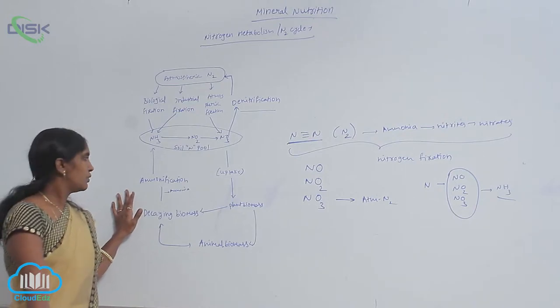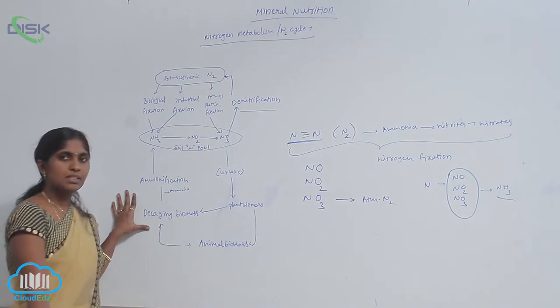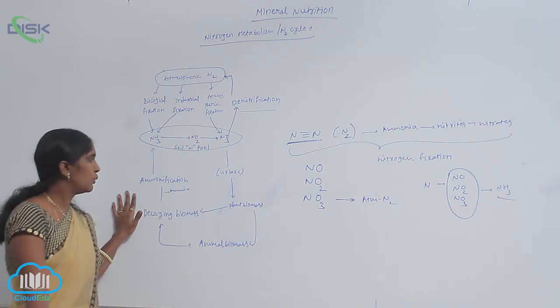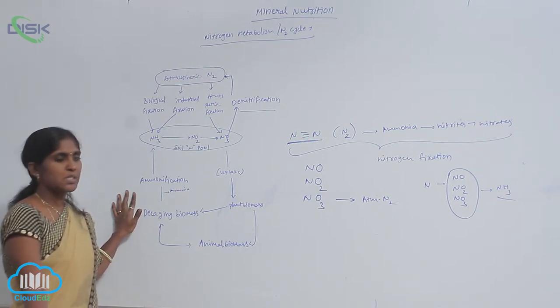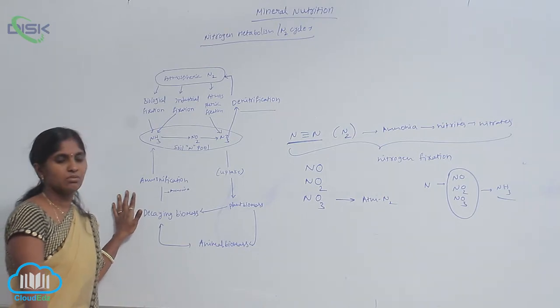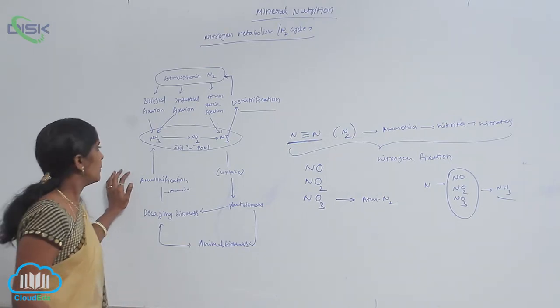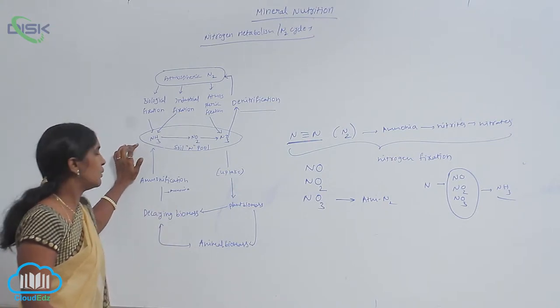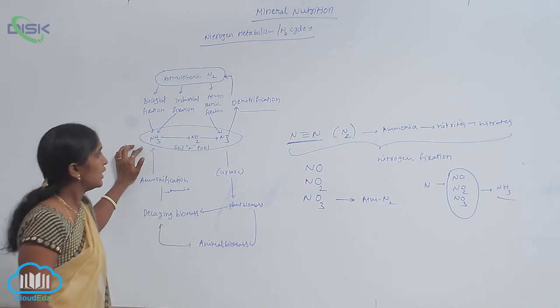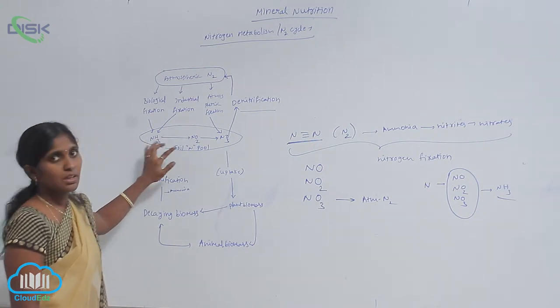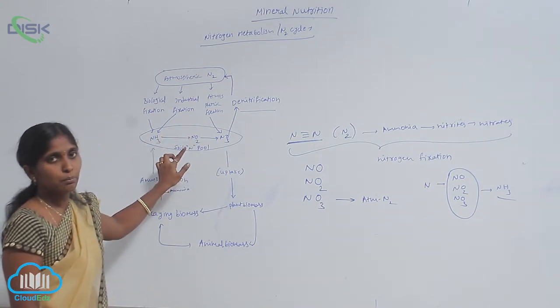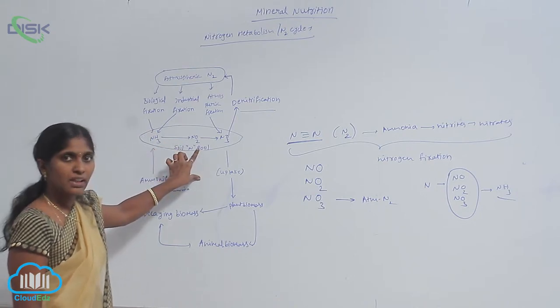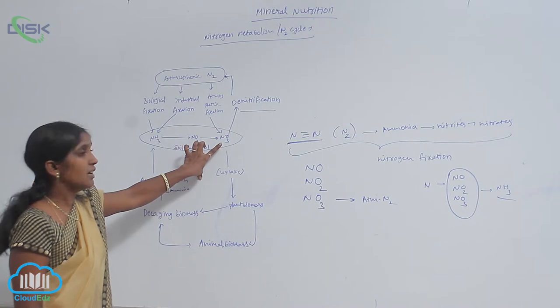Decomposition of dead plants and animals yields ammonia. This process is called ammonification. Ammonification is a source of ammonia which is available in soil and re-enters the soil nitrogen pool. From there, it is converted into nitrates as well as nitrites.